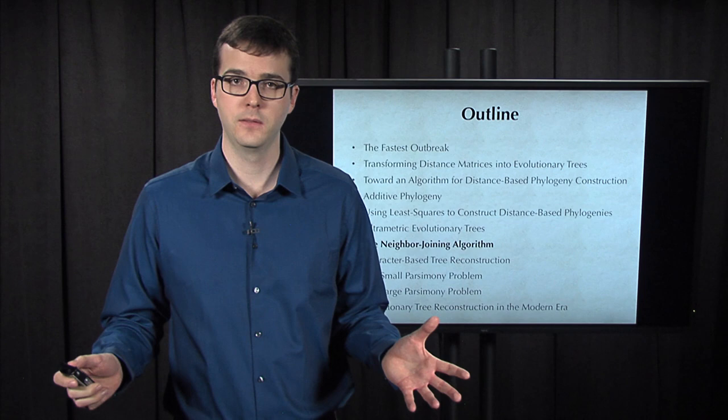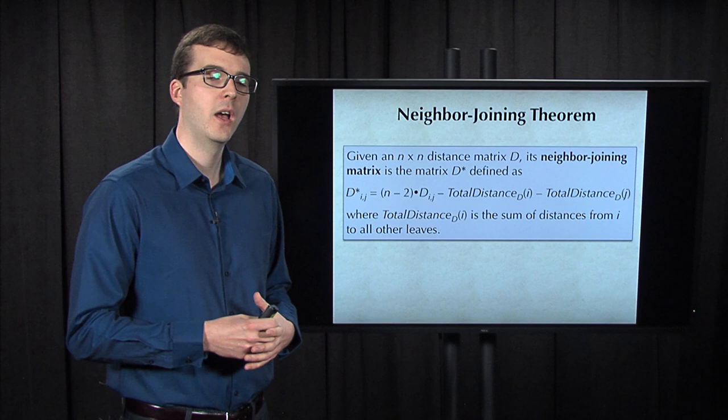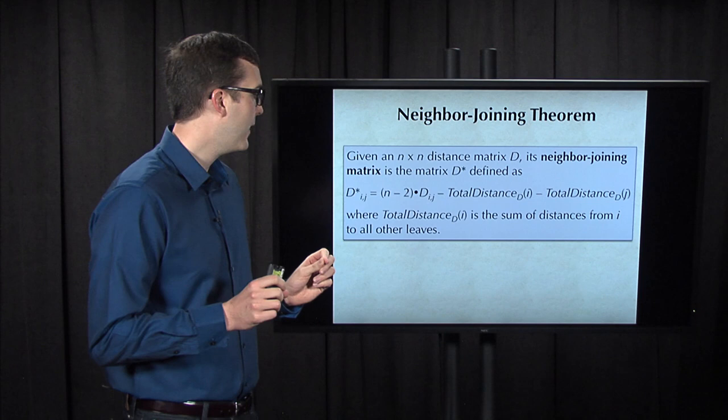So first, to see how this works, define the neighbor-joining matrix of a given distance matrix D as the matrix D* whose ijth entry is given by the formula shown on the slide.